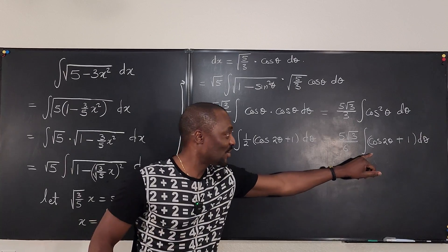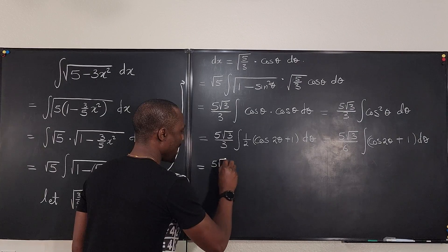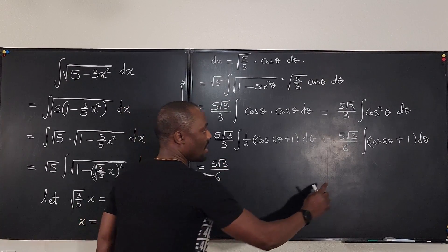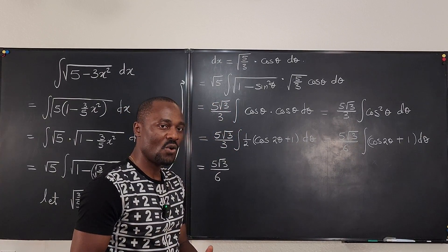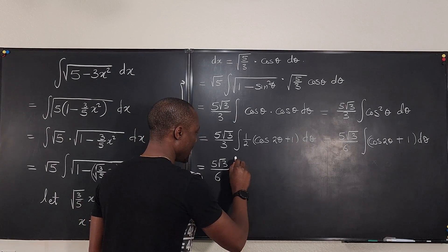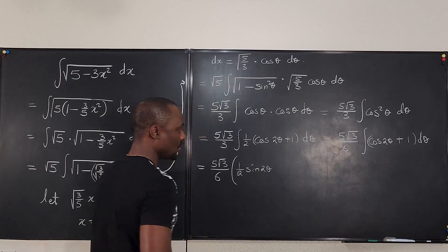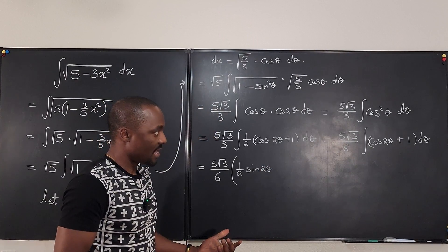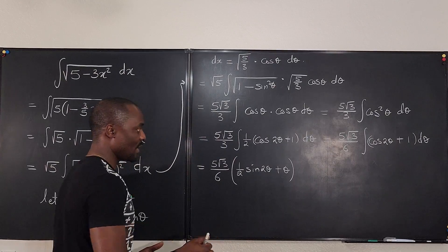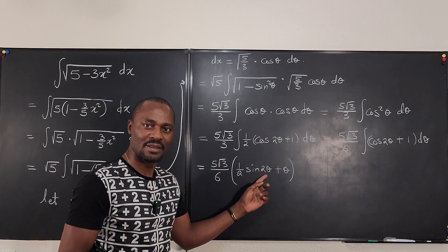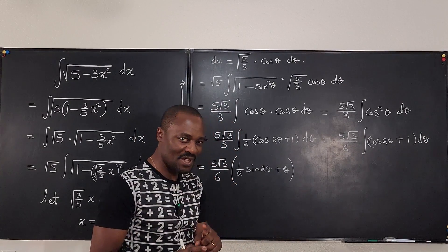The basic thing to do next is just to integrate, leaving the constant on the outside. So we have 5 rad 3 over 6 times the integral of cosine 2 theta plus 1 d theta. If we integrate cosine 2 theta, it becomes sine 2 theta over 2 — so that's one half of sine 2 theta — and integrating 1 d theta gives theta. So the result is 5 rad 3 over 6 times the quantity: half of sine 2 theta plus theta. We know sine theta, but we don't yet know what sine 2 theta is.